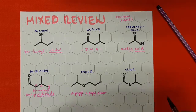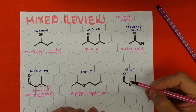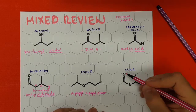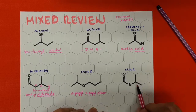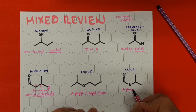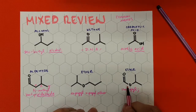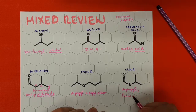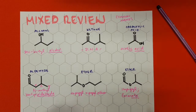Last but not least, the common name for the ester. We have the oxygen side and the carbon side — the oxygen side comes first. We write isopropyl. Then on the carbon side, we only have one carbon — that's the prefix 'form.' Since it's an ester, we add the ending '-ate.' So we're done: isopropyl formate.